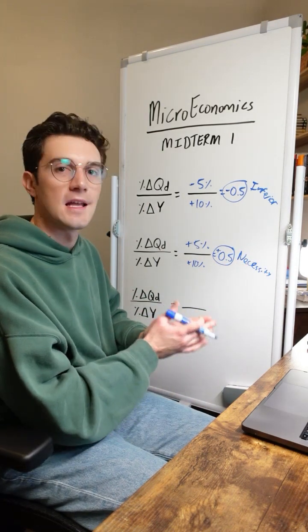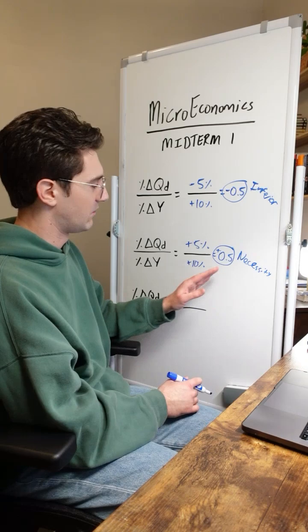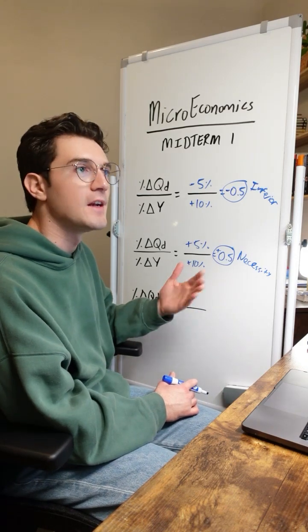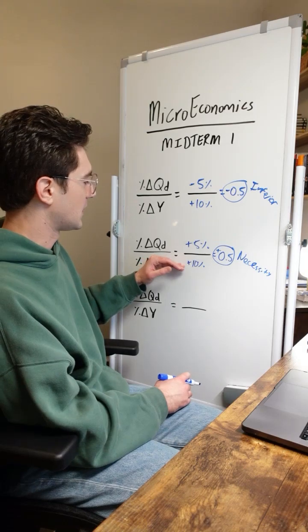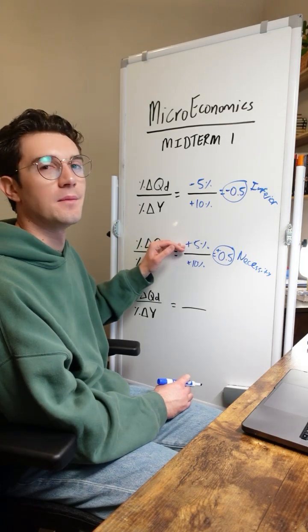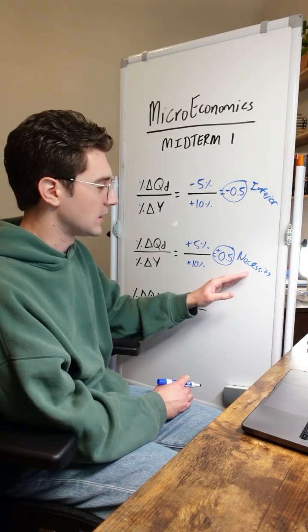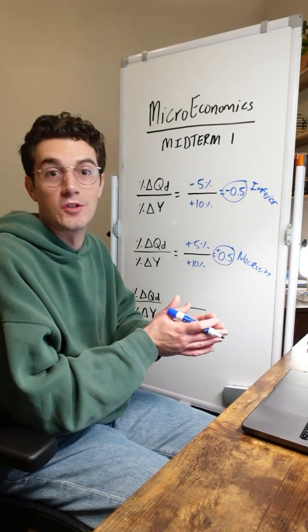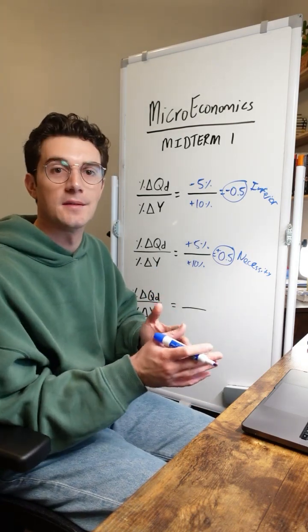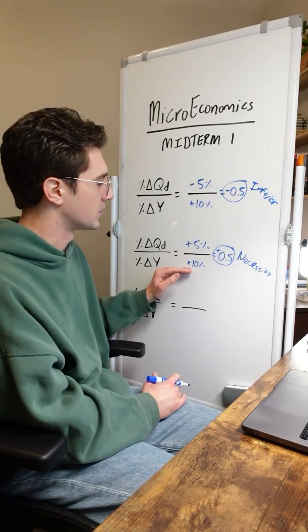When we have more income, we buy a little more of it, but not a bunch more. If this value were higher than one, that would indicate that we'd be buying a lot more of it when we have more income. But when our income rises by 10%, we're only buying 5% more of the good because chances are we already have enough of it, but we're maybe giving ourselves a little cushion or just a little bit extra of the necessity because we want to.